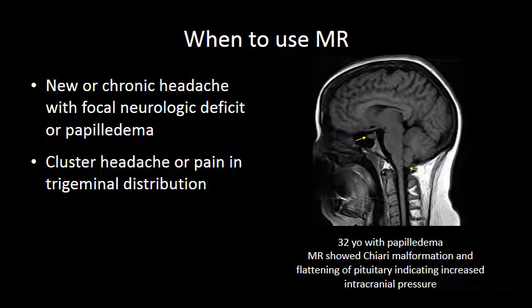When do we need to image, and when should we use MRI versus CT? MRI is probably the better modality for evaluating most headaches, particularly headaches that show a focal neurologic deficit. If you have a patient with a new or chronic headache and there is a focal neurologic deficit, a localizable neurologic symptom or sign, or there is papilledema, then MRI is usually warranted.